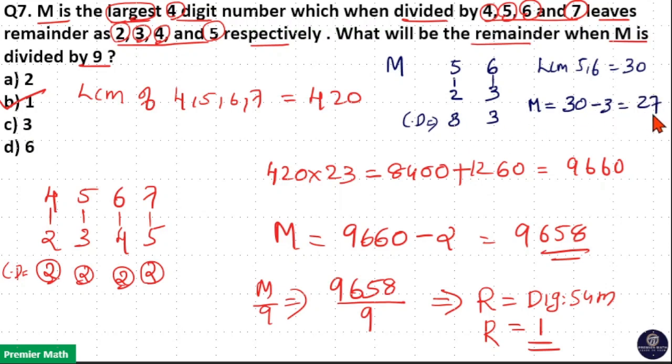Which will be M. So M is equal to LCM 30 minus common difference 3, which is equal to 27. Now if you divide 27 with 5 it will leave you remainder 2. When you divide 27 with 6 it will give you remainder 3. So this is the concept here.